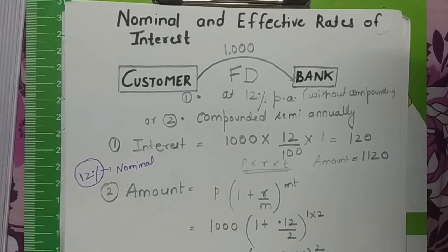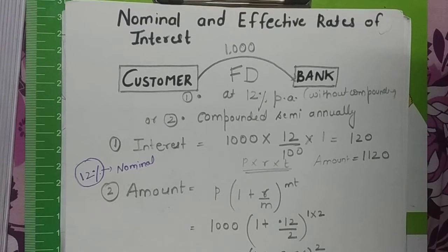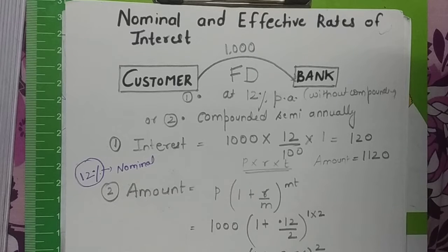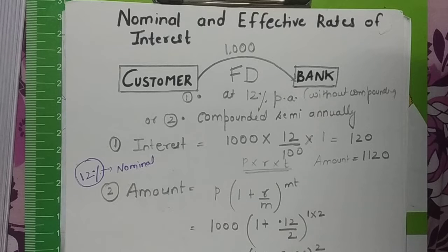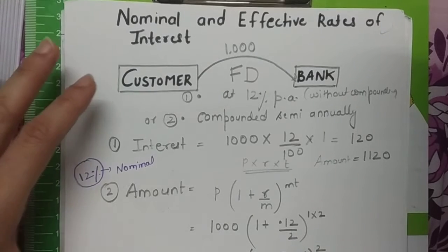This video is in continuation of the mathematics of finance series. I'll be talking about nominal and effective rate of interest. When we deposit money in a bank, the bank advertises a fixed deposit rate — say 7.7% — but since compounding is done quarterly, they are actually giving you more than that. The nominal rate is what's advertised, but the actual yield is higher, which is called the effective rate of interest.